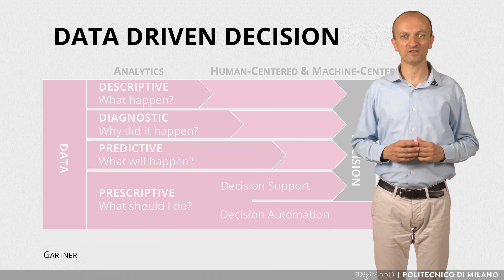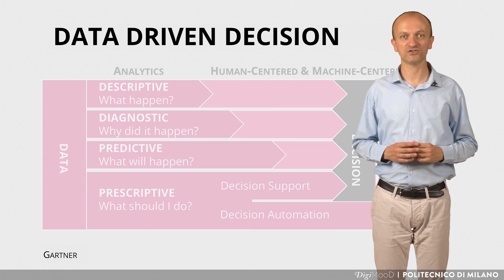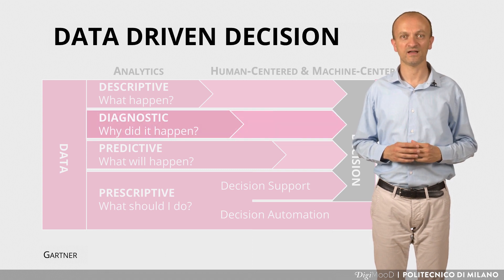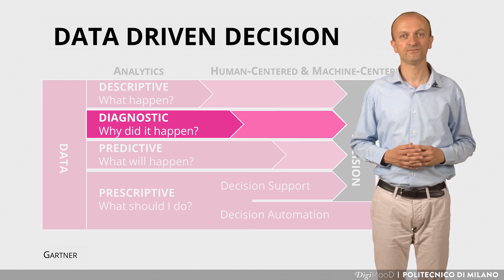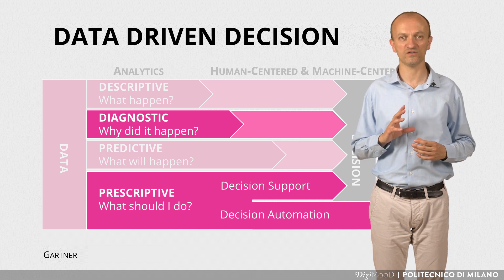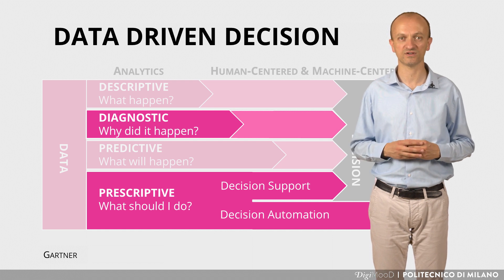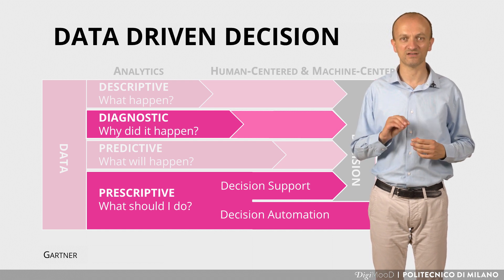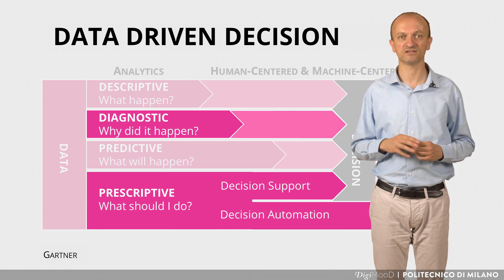Gartner, the well-known advisory and strategic consultancy company, introduced two additional types of analytics. Diagnostic analysis, which tells why something happened, and prescriptive analysis, which reduces to a minimum or even eliminates the need of the human in the loop in the decision making processing, by directly providing prescriptions on how to act based on the analysis of the data.